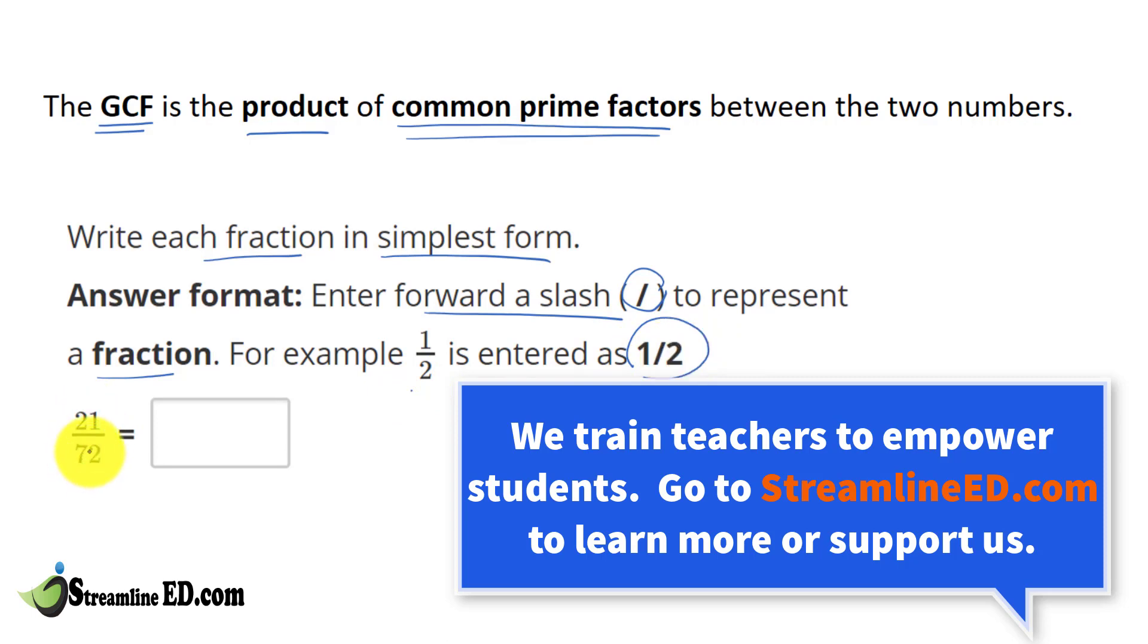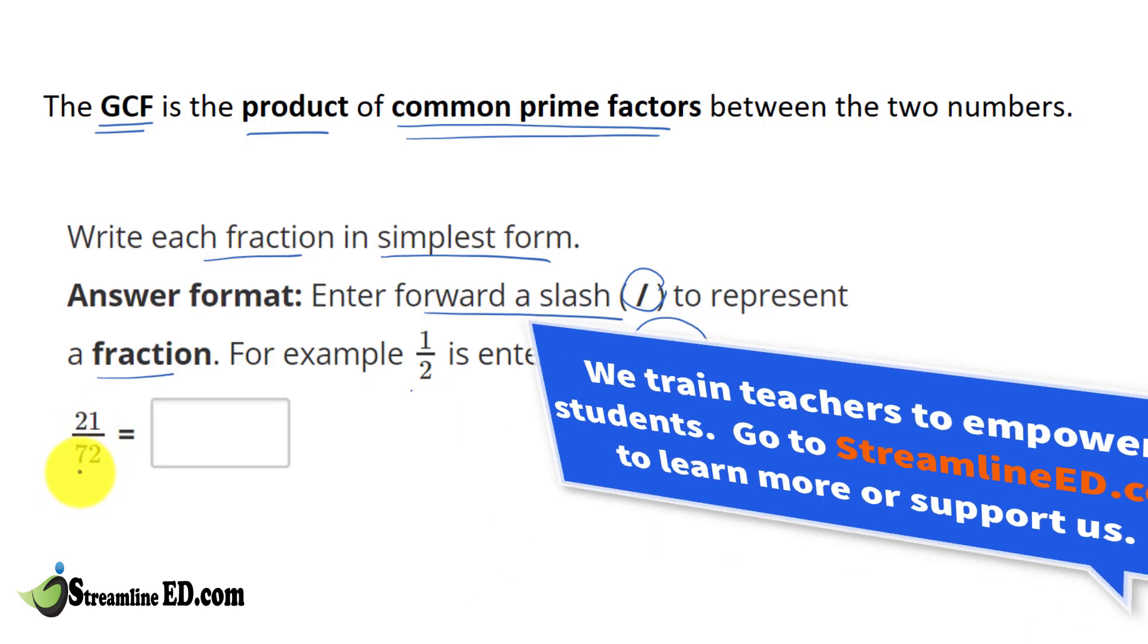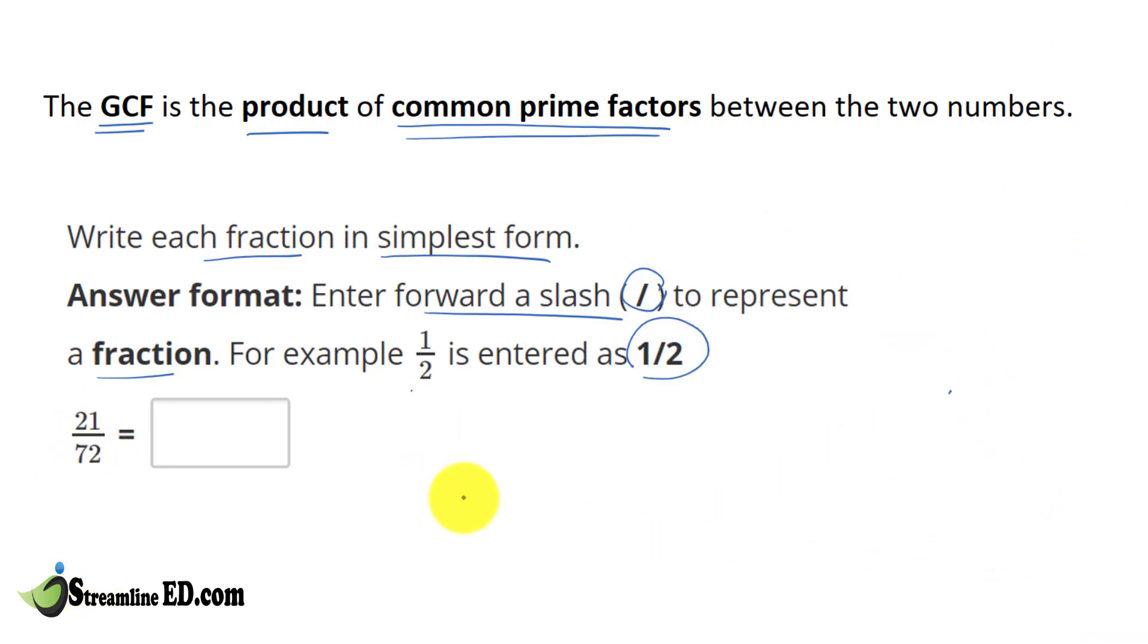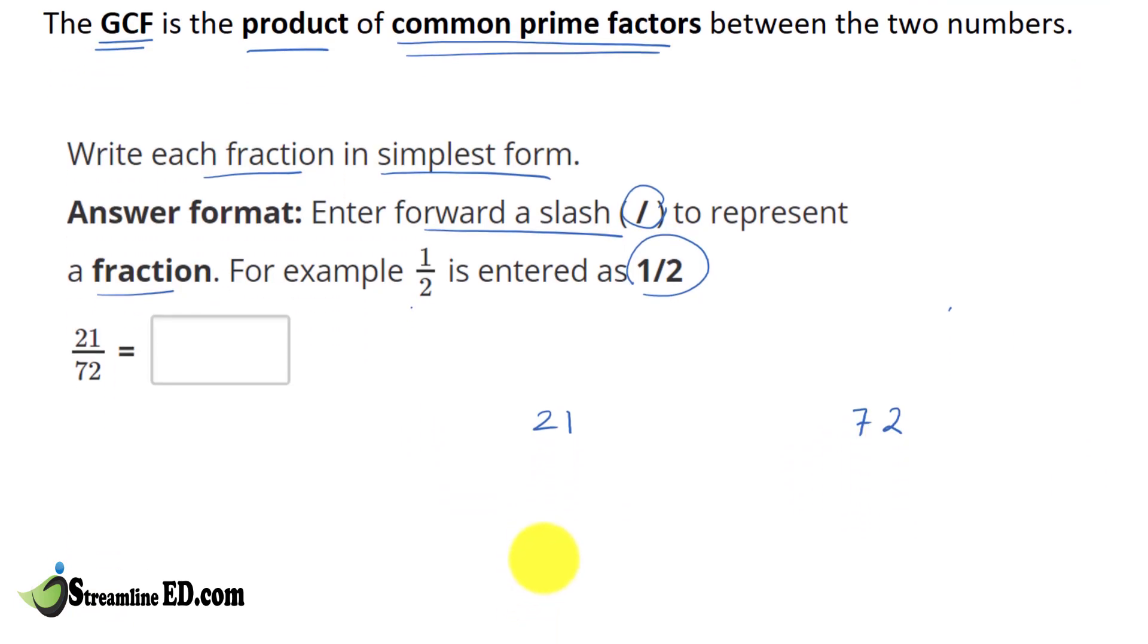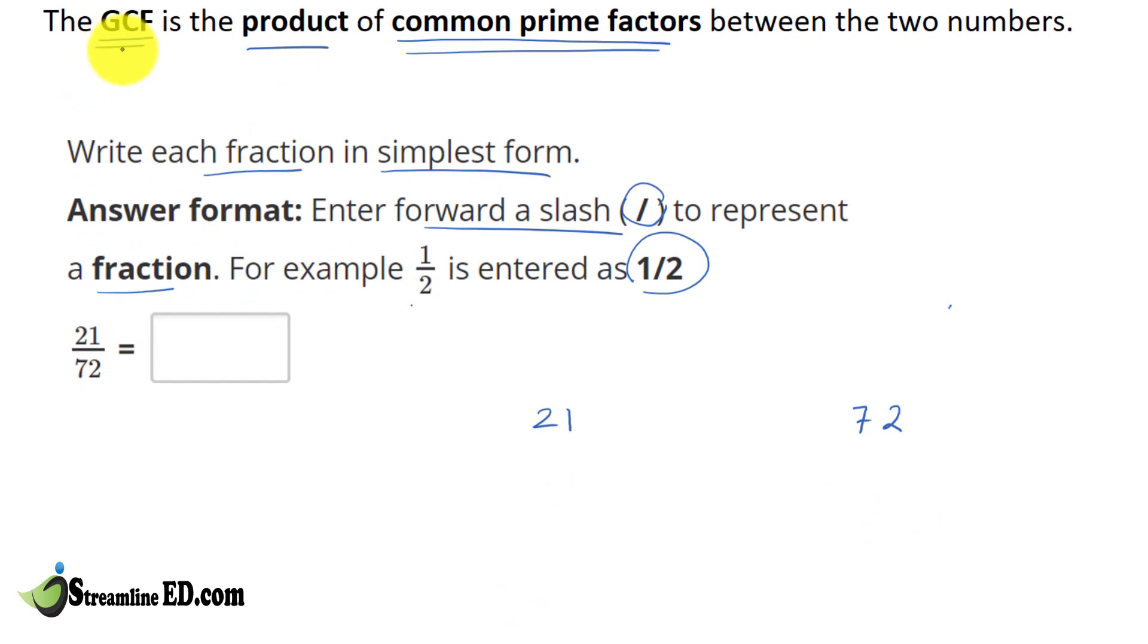So here we have two numbers, we're going to use prime factorization to write this in simplest form. We have 21 and 72. The first thing we have to do is find the greatest common factor between two numbers. To do that, we need to find the prime numbers that make up 21. Before we do anything, remember we have to memorize this common prime number 2,